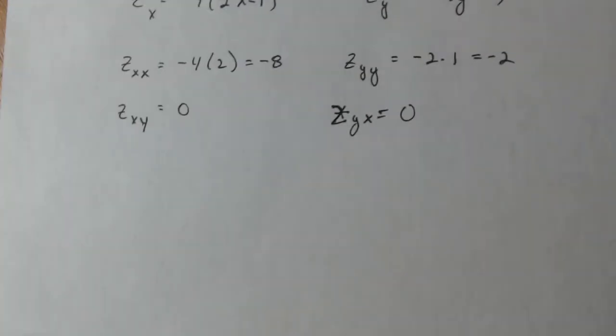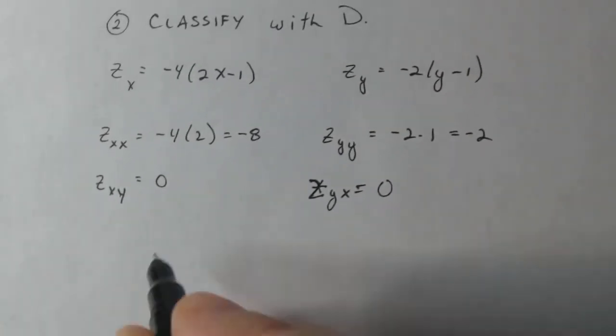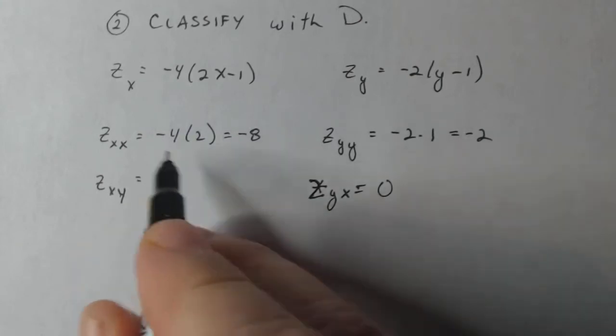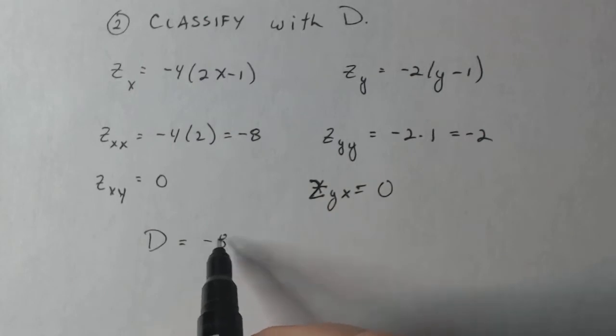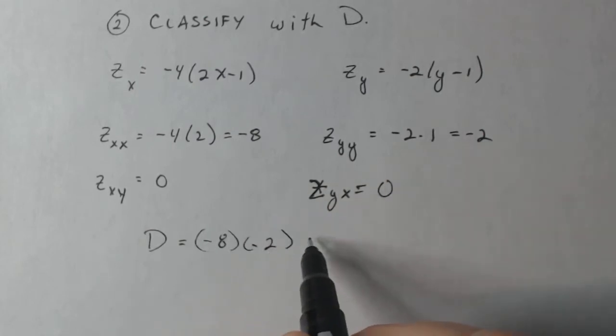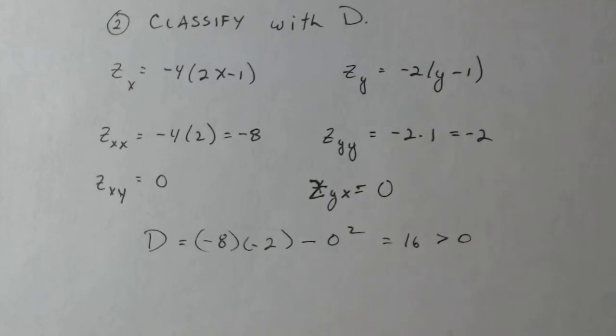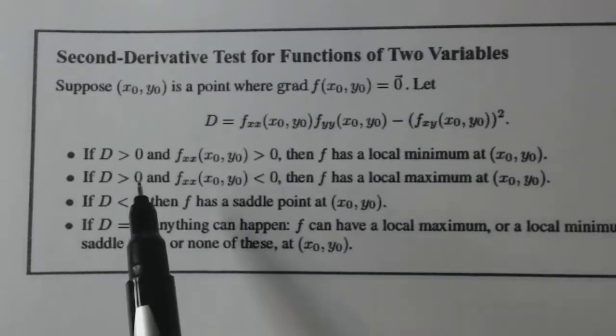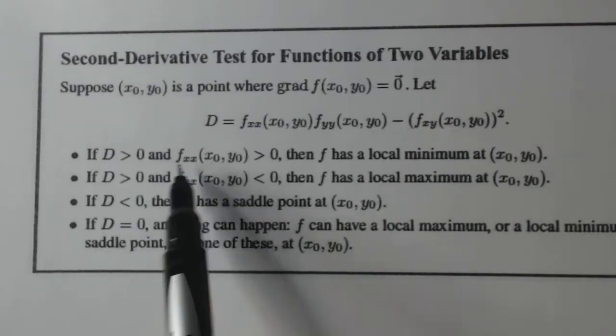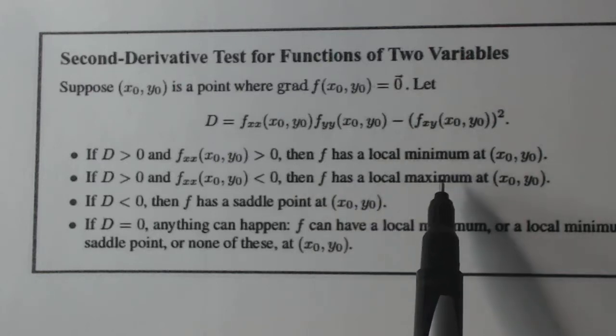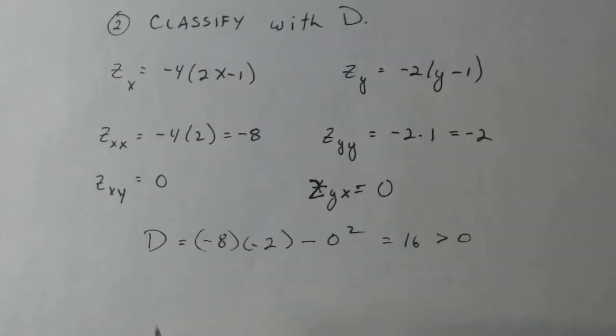Now I'm gonna put the discriminant together. Again, this is a straightforward problem because everything's a constant here, but we're gonna go through it anyway. So z sub xx is minus eight. Z sub yy is minus two. And z sub xy is zero. So I get my discriminant is positive 16 greater than zero. So if I look at this situation here, if my discriminant is greater than zero, I have to look at the sign of f sub xx. And then I can determine if I have a min or a max.